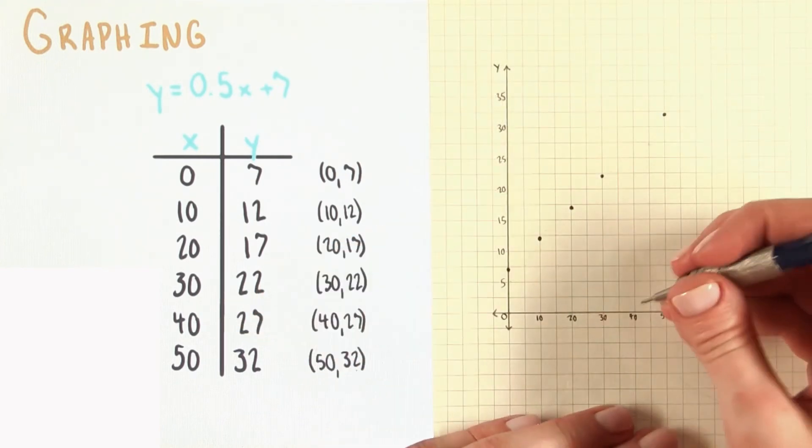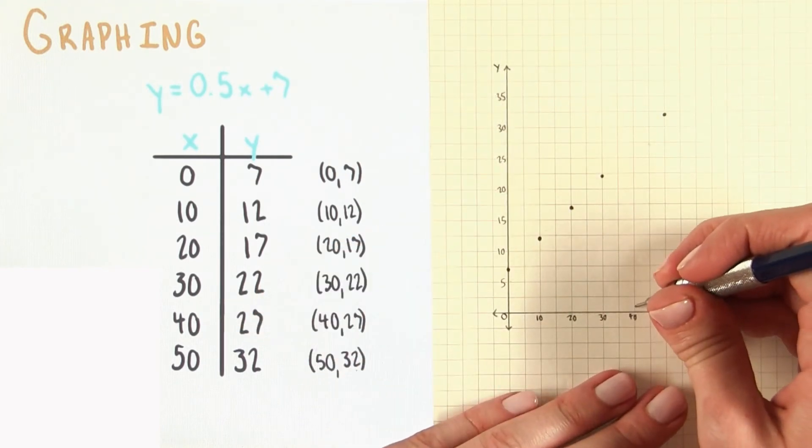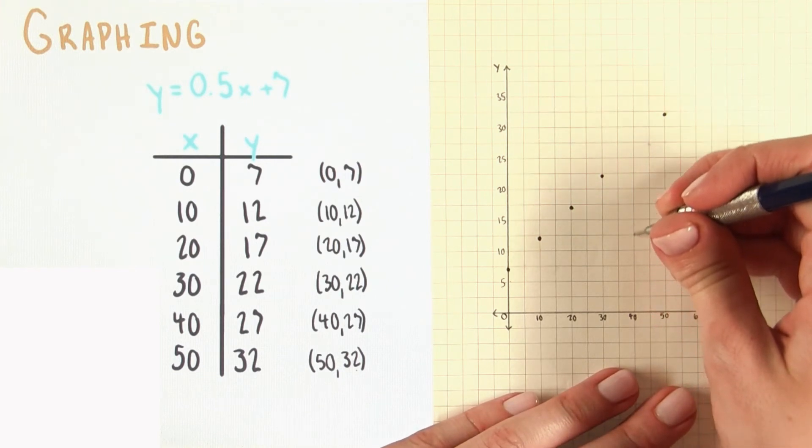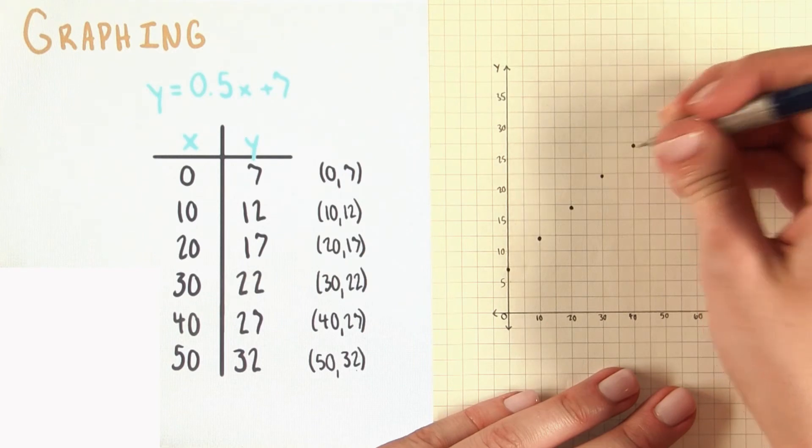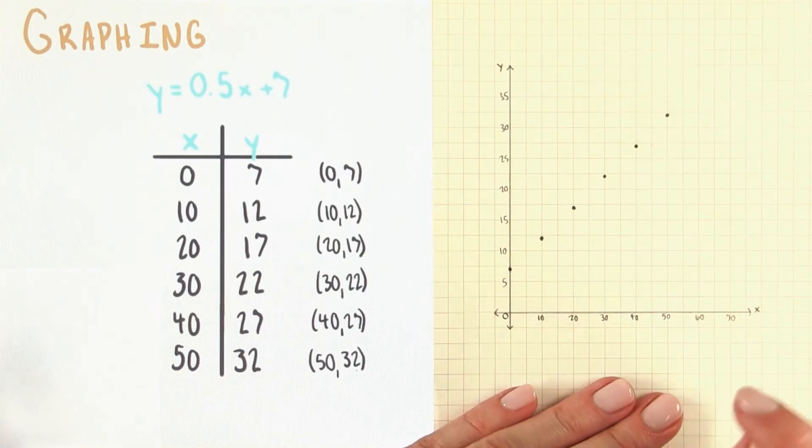Okay, so that was the point 40, 27, so I'll just graph that one again. 40, very carefully following this line up to the 27 mark. That looks better than the other point. So you can see I must have just shifted my hand to the right when I was graphing.